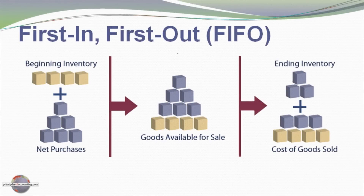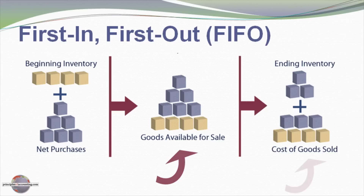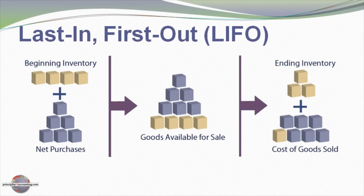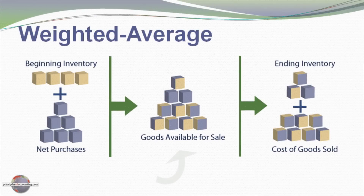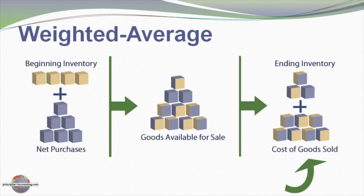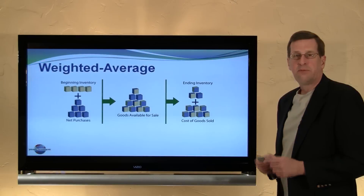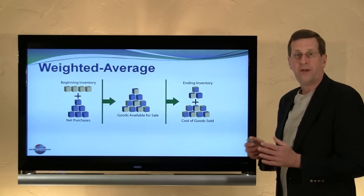To recap briefly: under first-in, first-out, beginning inventory (shown in gold) and purchases (in blue) together comprise goods available for sale. Cost of goods sold includes those gold units from beginning inventory plus some purchases, while ending inventory comes from the very last purchases. Under LIFO, ending inventory is all gold — from beginning inventory — while all purchases and some beginning inventory flow to cost of goods sold. Under weighted average, all costs are blended together and that average cost is reflected in both ending inventory and cost of goods sold. In the next module, we will look at actual mathematical examples of applying FIFO, LIFO, and average methods.